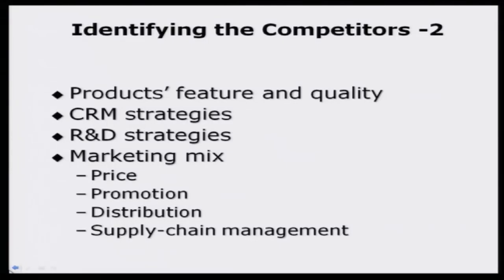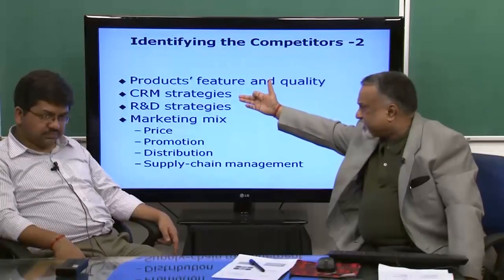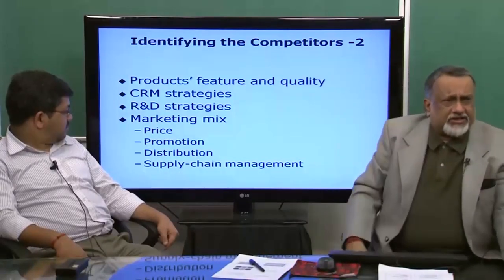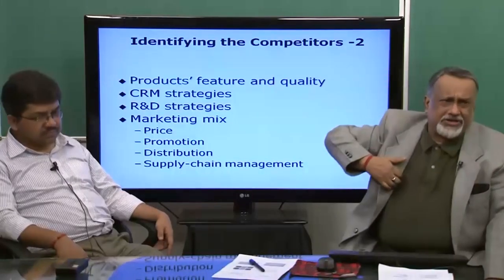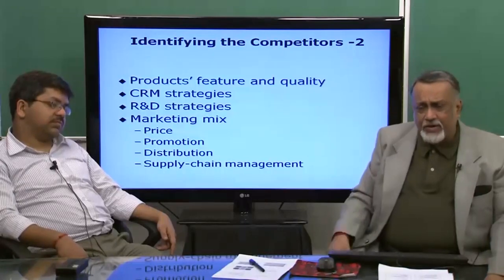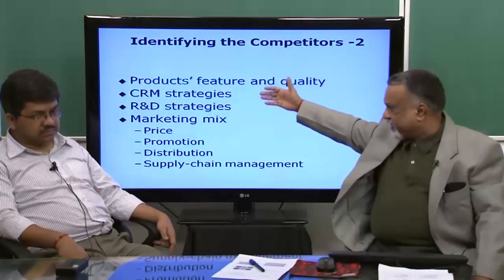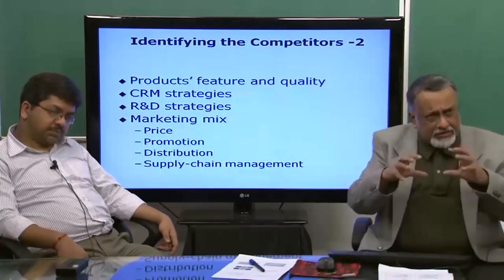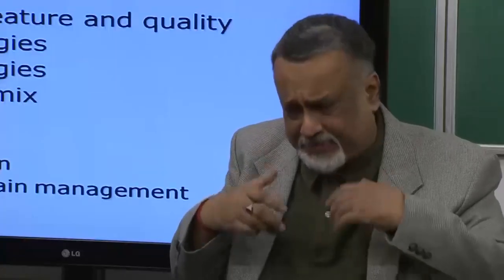To identify competitors, you have to analyze them in terms of their product features and quality relative to yours. Similarly, their customer relationship strategies and customer retention strategies are now placed right next to product or service feature and quality because this is the primary mode of competition today. You also have to study R&D strategies and the tactical side — competitors' pricing, promotion, distribution, and supply chain management strategies. All this data collection must happen continuously.